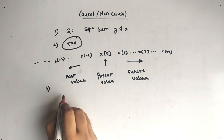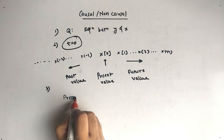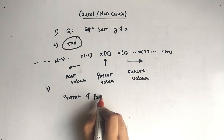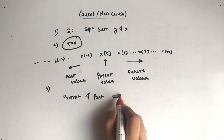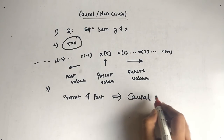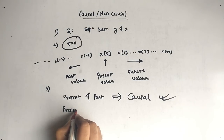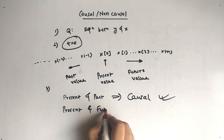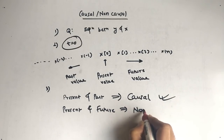There are combinations: whenever you get present and past, this means your system is causal. Now when you get present and future, this means your system is non-causal.